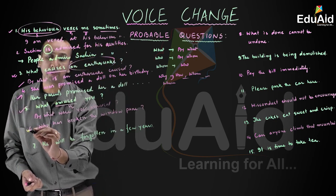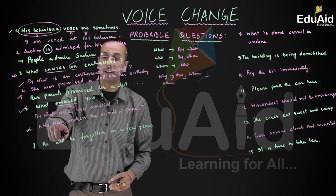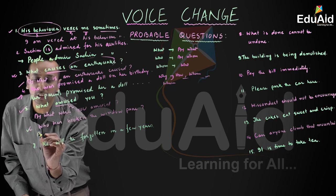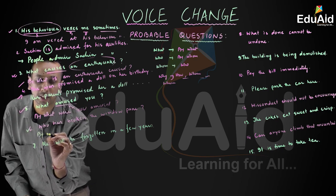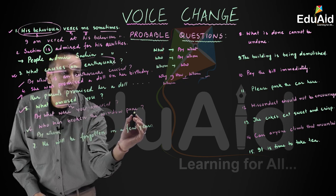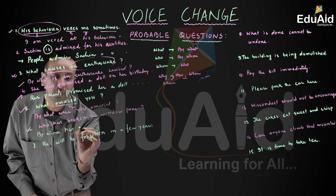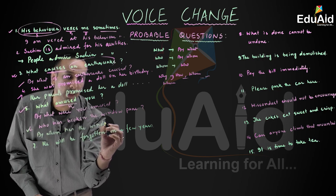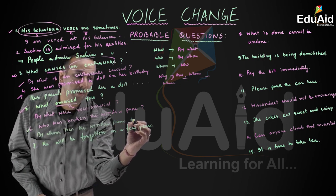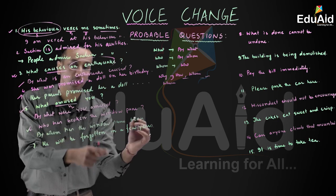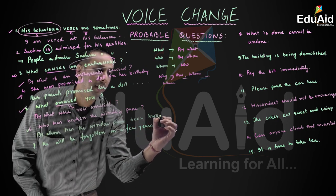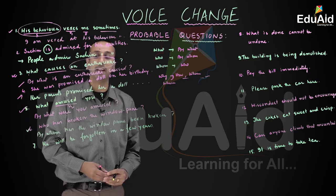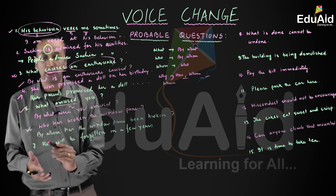Question: 'Who has broken the window pane?' The tense is present perfect — 'has broken.' In the case of 'who,' we use 'by whom.' The window pane is singular. The passive form is: 'By whom has the window pane been broken?' Retain the question mark.